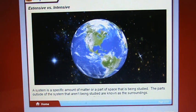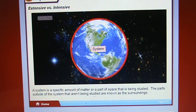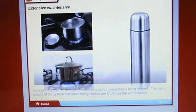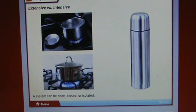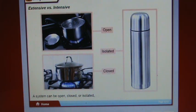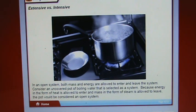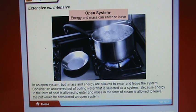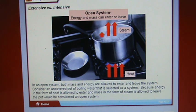A system is a specific amount of matter or part of space being studied. The parts outside the system are called the surroundings. A system can be open, closed, or isolated. In an open system, both mass and energy are allowed to enter and leave. Consider an uncovered pot of boiling water: heat can enter and steam can leave, so it is considered an open system.